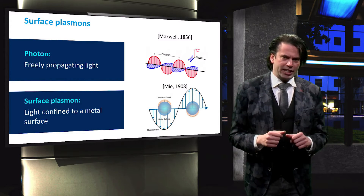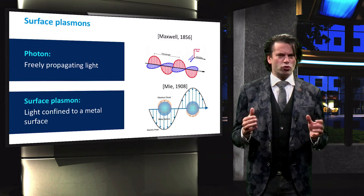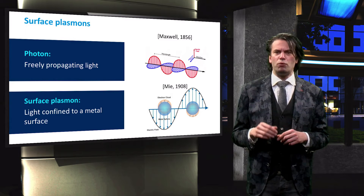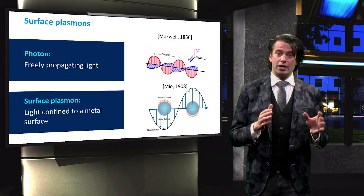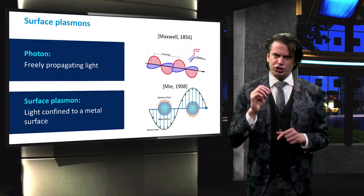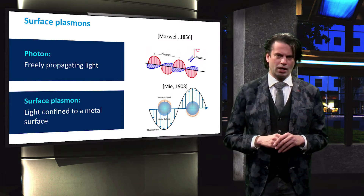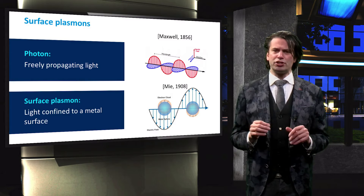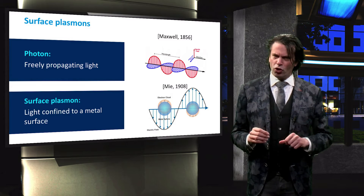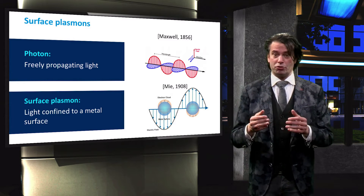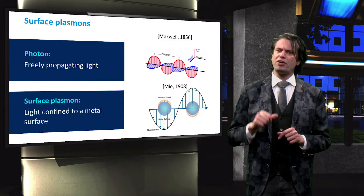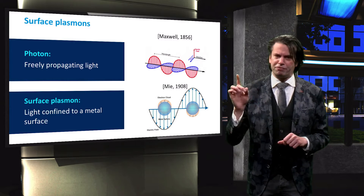A surface plasmon is defined as an electromagnetic wave confined to a metal surface. A surface plasmon may exist at the interface of two media with dielectric constants of opposite signs, like a metal and a dielectric. Surface plasmons are collective oscillations of the conduction electrons in metal particles. Light incident on the metal particles causes an excitation of the conduction electrons, leading to polarization of the metal particle. The overall displacement of the negatively charged electron cloud with respect to the positively charged nucleus gives rise to a restoring force. The plasmon resonance caused by this restoring force occurs at a specific frequency.